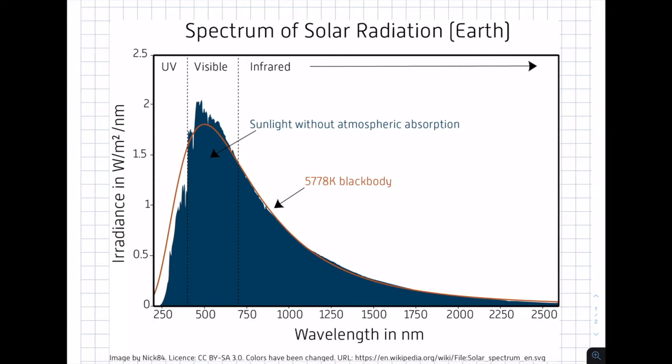Next, we want to talk about the spectrum of solar radiation. What you can see on this figure is the spectrum we get from the sun in blue. This slope of the curve represents the spectrum — on the x-axis you see the wavelength of the photons we get from the sun, and on the y-axis the irradiance, so the strength or amount of photons.